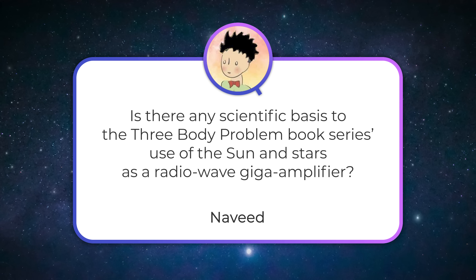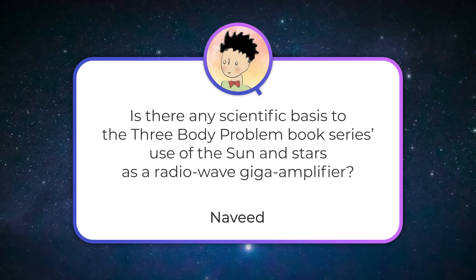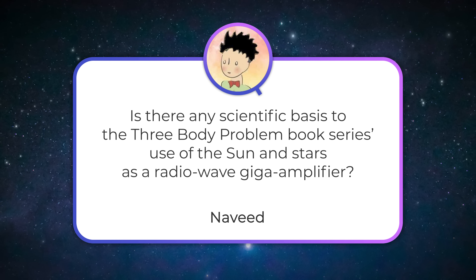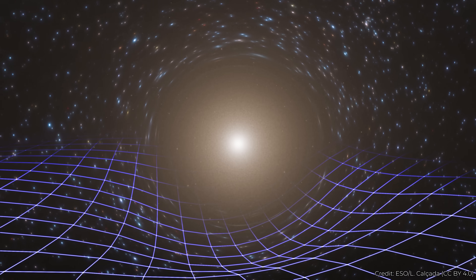Navid asks: is there any scientific basis to the Three-Body Problem book series' use of the sun and stars as a radio wave giga amplifier? Sort of. In the Three-Body Problem, the main character realizes that she can use the sun as a way to send and receive messages, and uses that to sell out planet Earth to the Trisolarans. There is a version of this idea, and that is the solar gravitational lens.